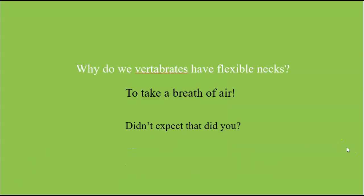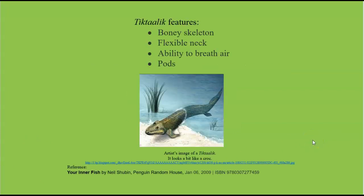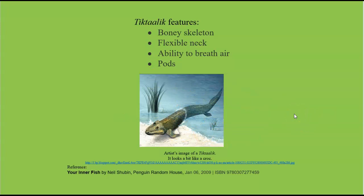So why do vertebrates have flexible necks? It's to take a breath of air. You didn't expect that, did you? The Tiktaalik has a bony skeleton, a flexible neck, the ability to breathe air, and pods — making it your first example of a land vertebrate. This artist's image of the Tiktaalik looks a whole lot like a croc, and that's reasonable because they probably lived in similar environments. Isn't it nice to get to know your ancestors, even if they are 375 million years removed?